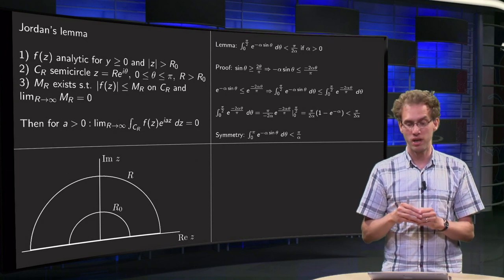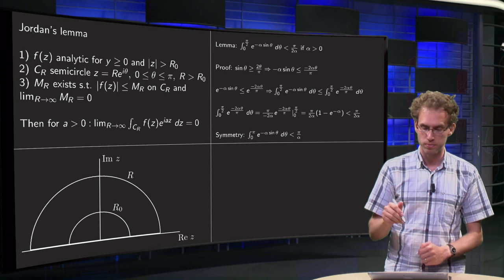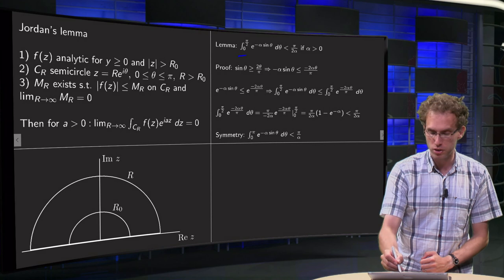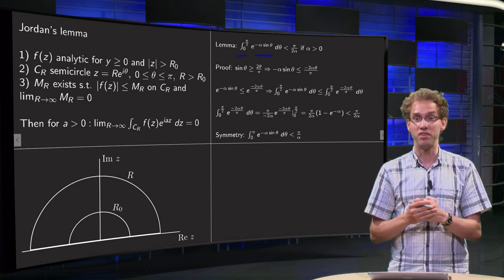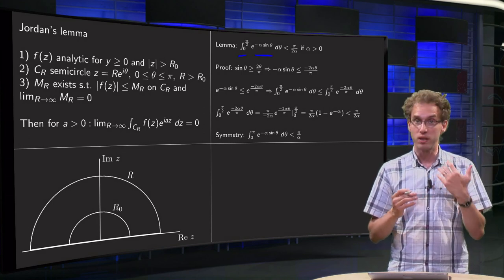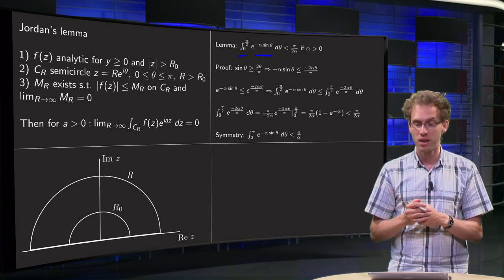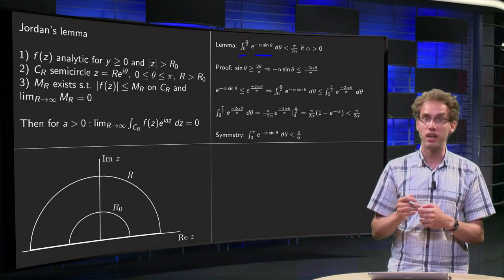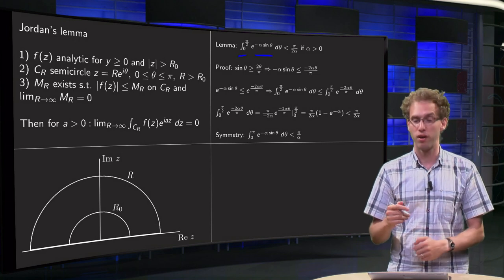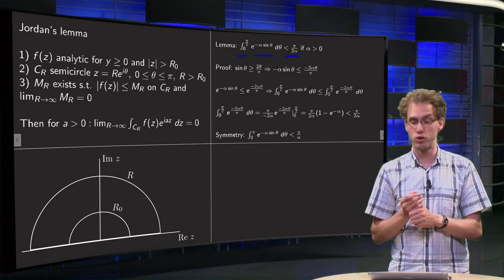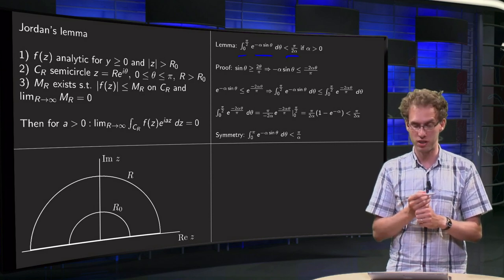Now, first we will use a little lemma in order to show this. A lemma for a real integral: integral from 0 to π/2 of e to the power minus α sin θ dθ. We cannot find an antiderivative, but we can estimate this using the inequality we did in the video before. And we can show that this integral is smaller than π over 2α for α bigger than zero.